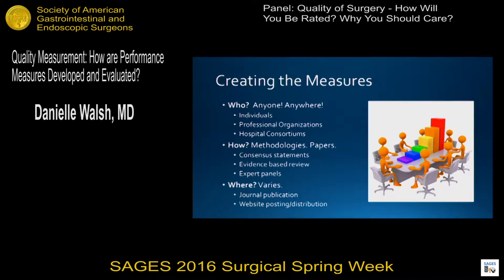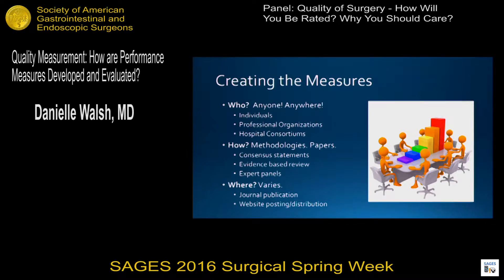Once you have data, many people go about trying to create measures — and anyone can create a quality measure. The majority of the ones used in surgery right now are being created by professional organizations such as the STS, and hospital consortiums can create their own. There are many different methodologies used: grade analysis of studies, consensus statements, evidence-based reviews — many of you are familiar with SAGES guidelines, which fall into that category — and expert panels that form consensus papers. All of those can be considered quality measures of one form. Most organizations publish them, and many websites host them in addition to the initial organization that created them.